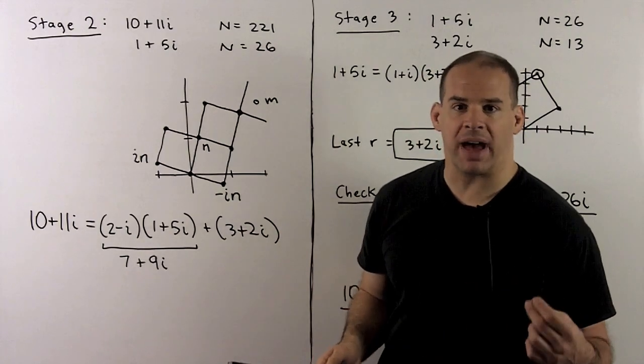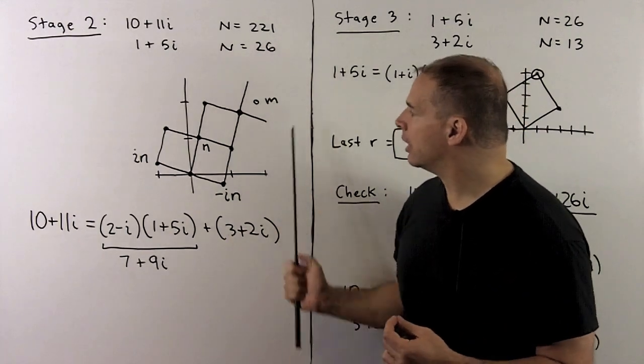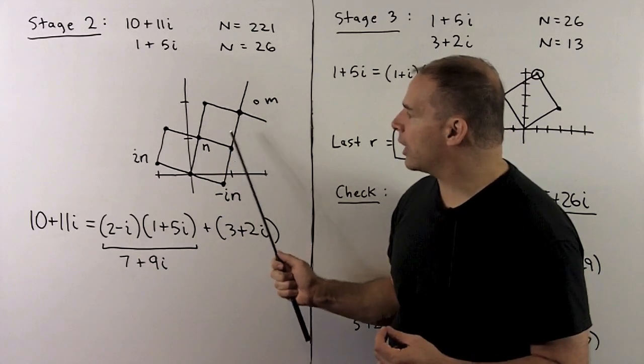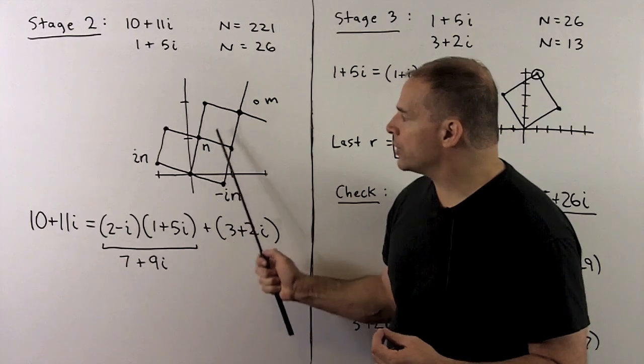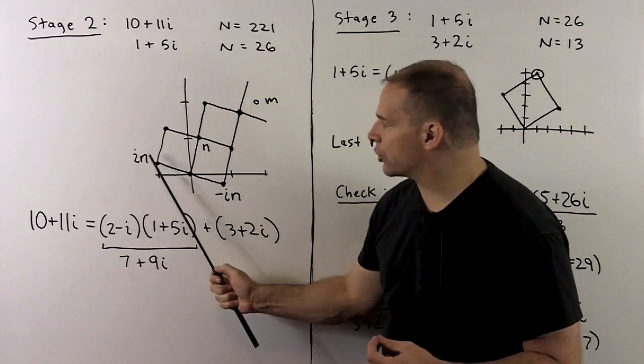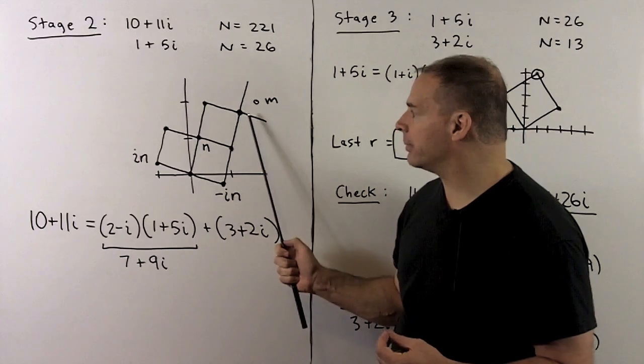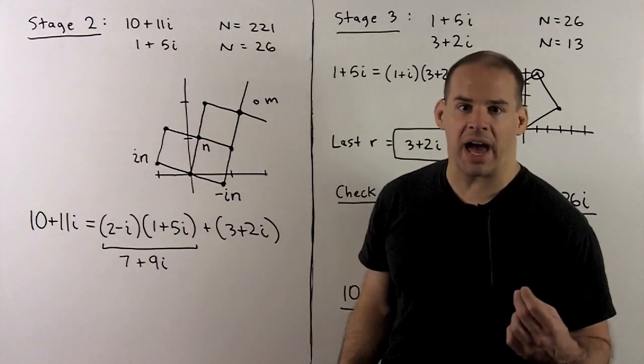We draw the lattice for 1 plus 5i. Now, m is here, so the closest lattice point is this one. How do we interpret that? Well, n goes in this direction, in goes in this direction. So we're going to have two n's, and then we're going to subtract off an in. So it's the same as multiplying n by 2 minus i.